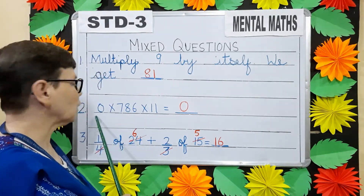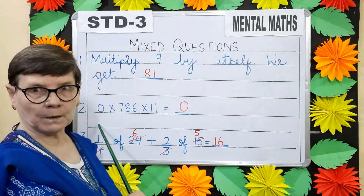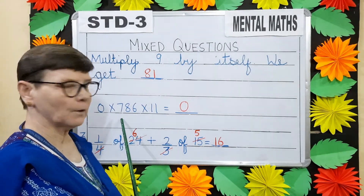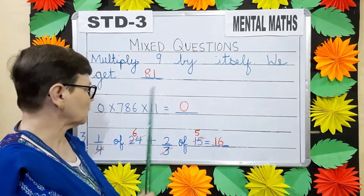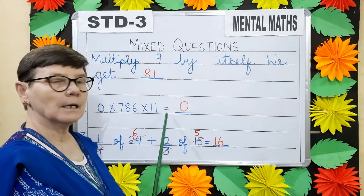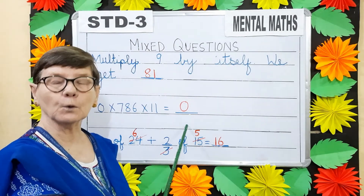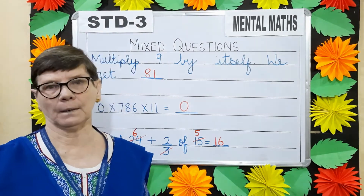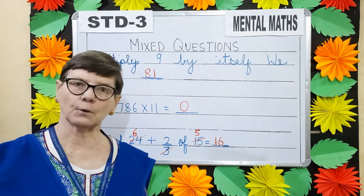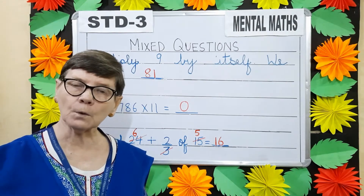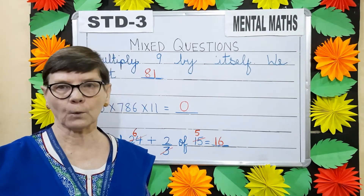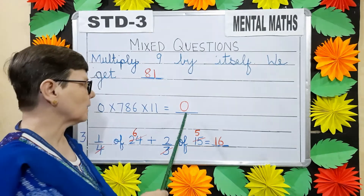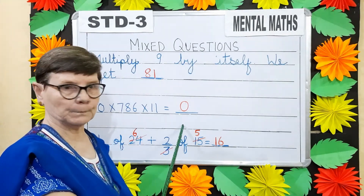Question number 2: 0 into 786 into 11 is equals to dash. Now any number multiplied by 0 will give you 0 as the answer. So we write 0 out here.